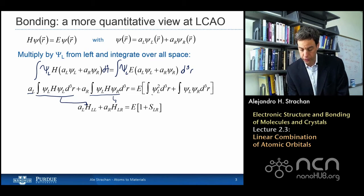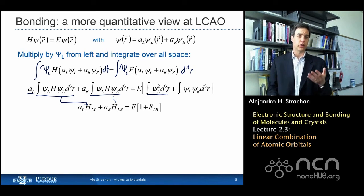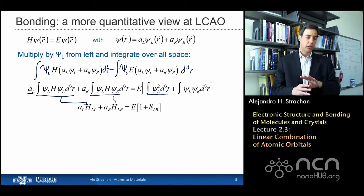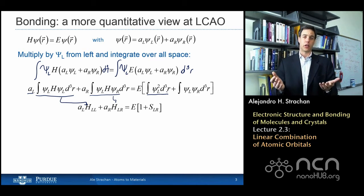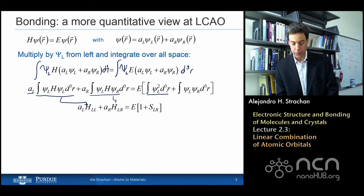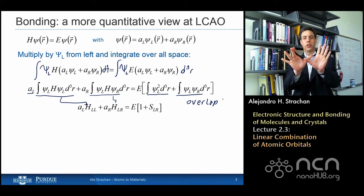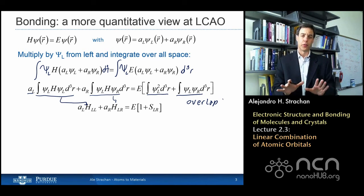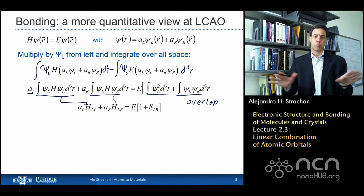On the right-hand side, the first integral involves the wave function squared. The wave function squared is the probability density of finding the electron at position r. Integrating that over all of space gives 1, because the probability of finding the electron somewhere is 1. Finally, the last term is called the overlap term — it's the product of the two wave functions integrated over all of space. If the two wave functions do not overlap spatially, that integral is going to be 0.